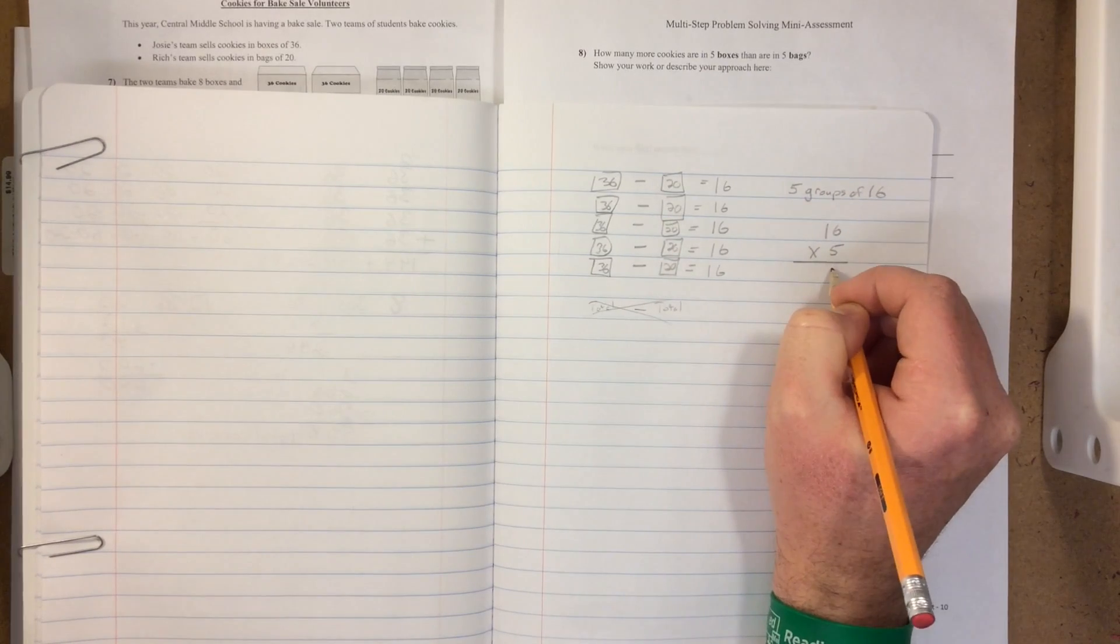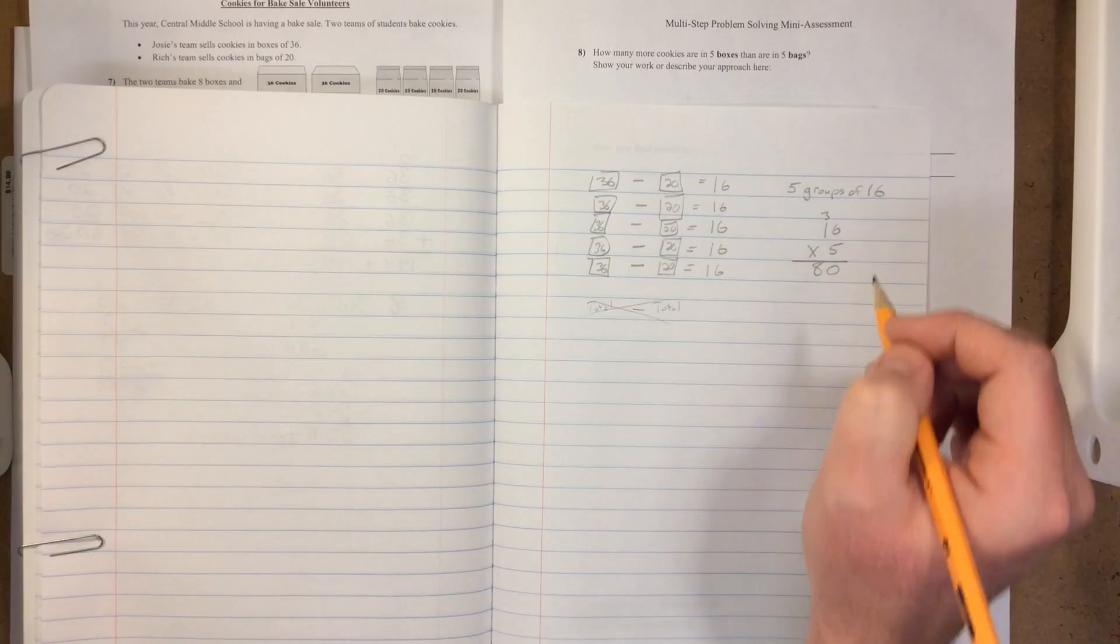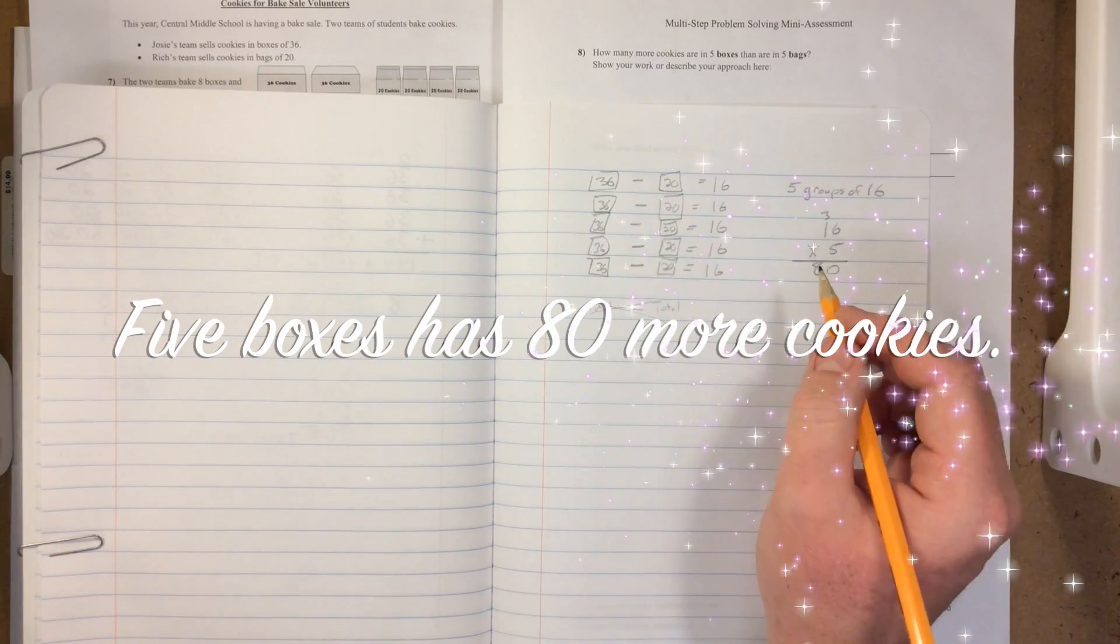So 5 times 16 is zero, carry the 3. So 5 times 1 is 5, plus 3 is 80. And that's it. That's the solution.